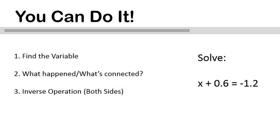Now I'm going to give you the full solution to this equation. Our variable is x. What happened to it? We're adding 0.6. So to do the inverse of that, I need to subtract 0.6 from both sides of the equation. That'll look like this. I have x plus 0.6 minus 0.6 on the left side of the equation. The plus 0.6 and minus 0.6 cancel each other out, so I'm left with x by itself on the left. On the right, I have negative 1.2 minus 0.6, which gives me negative 1.8.